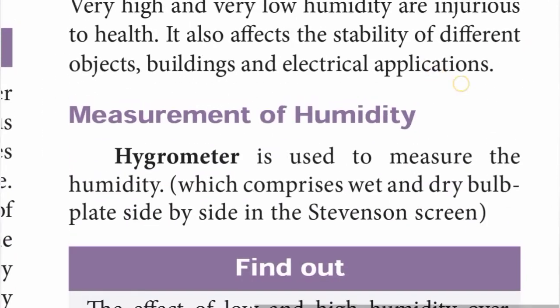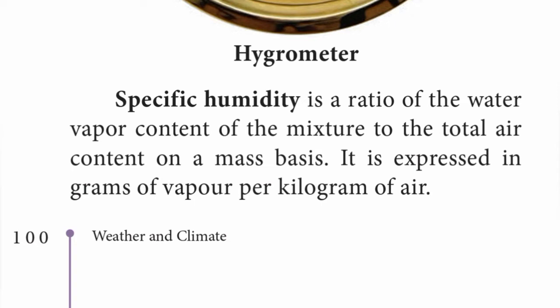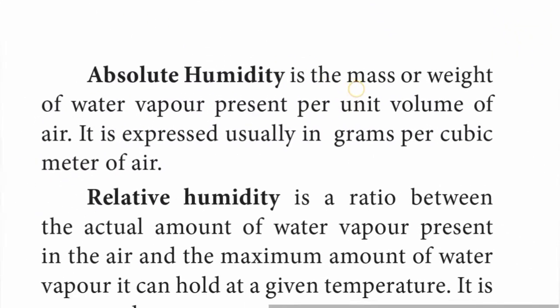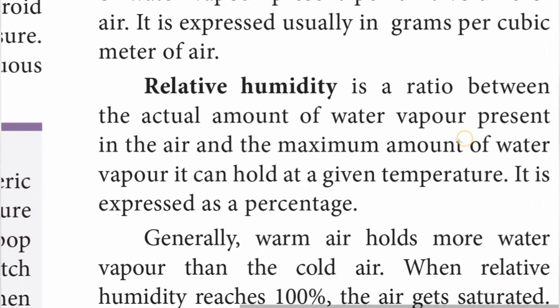Humidity is expressed in three ways: absolute humidity, relative humidity, and specific humidity. Specific humidity is the ratio of the water vapour content of the mixture to the total air content on a mass basis. It is expressed in grams of vapour per kilogram of air. Absolute humidity is expressed as the mass or weight of water vapour present per unit volume, usually in grams per cubic meter of air.